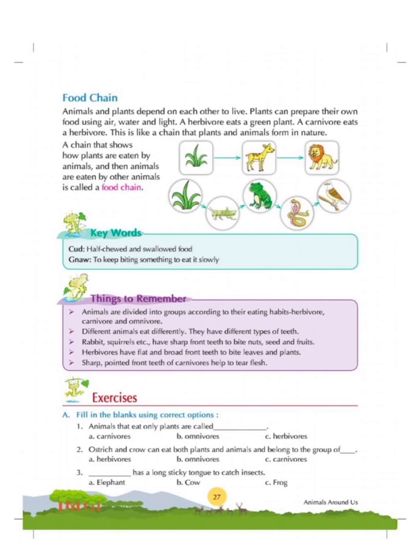Animals and plants depend on each other to live. Plants can prepare their own food using air, water and light. A herbivore eats a green plant, and a carnivore eats a herbivore. This is like a chain that plants and animals form in nature. A chain that shows how plants are eaten by animals and then animals are eaten by other animals is called a food chain.